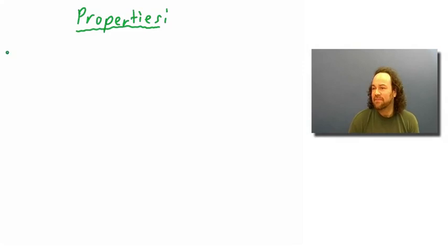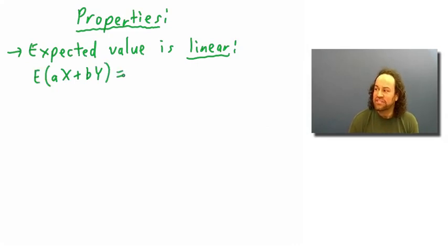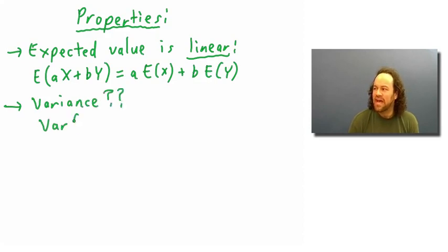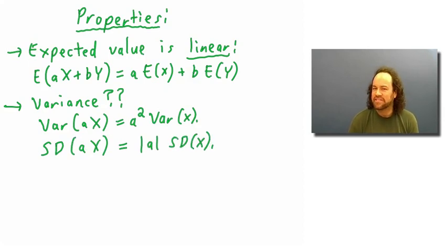These quantities satisfy a few simple properties. The mean or expected value is linear: if we take any linear combination of two random variables x and y, the expected value is just the corresponding linear combination of the individual expected values. The variance is not quite as nice — if we take the variance of a constant a multiplied by x, the variance multiplies by a squared, and the standard deviation multiplies by the absolute value of a.